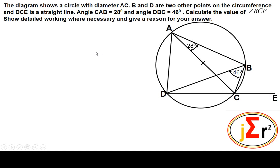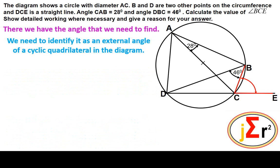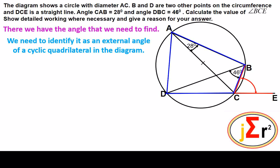On this occasion we are required to find the angle BCE. We are highlighting the angle that we need to find, and we need to identify it as an external angle of a cyclic quadrilateral located inside the diagram. That is our first job, in order that we may determine the size of that angle.